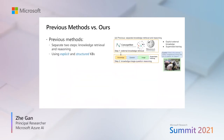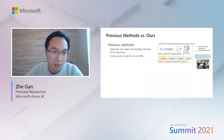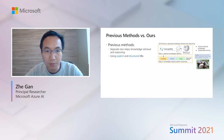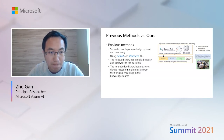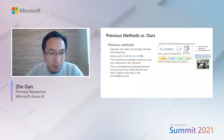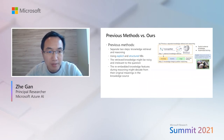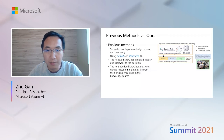Previous methods use a two-step approach: first performing knowledge retrieval, then knowledge reasoning. Basically, all these methods use explicit and structured knowledge bases such as ConceptNet and Wikipedia. However, this can be problematic. First, the retrieved knowledge might be very noisy and irrelevant to the question. Second, the re-embedded knowledge features during reasoning might be very different from their original meaning in the knowledge source.